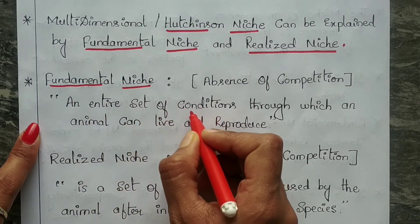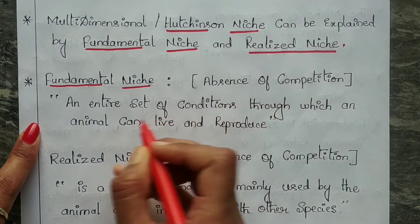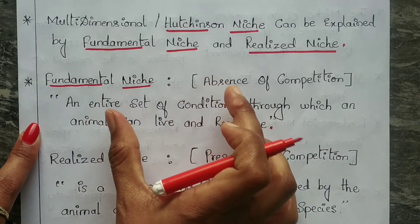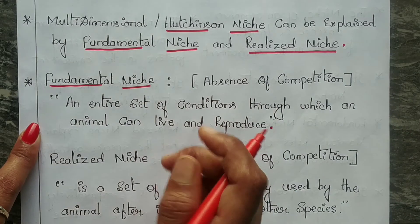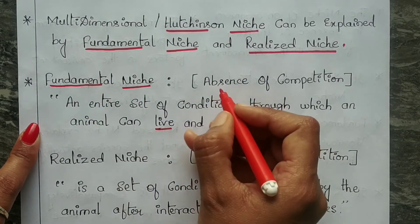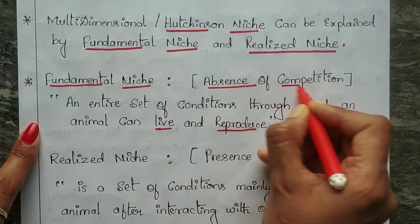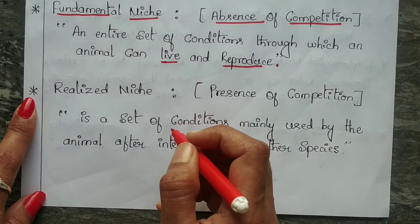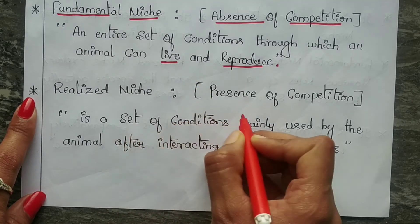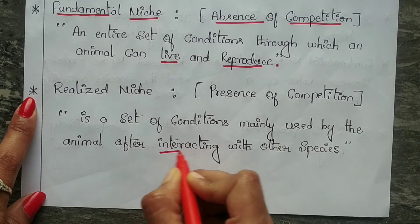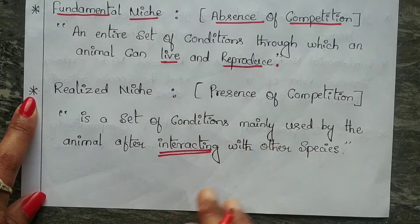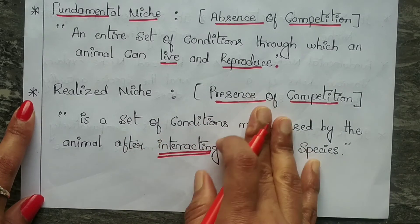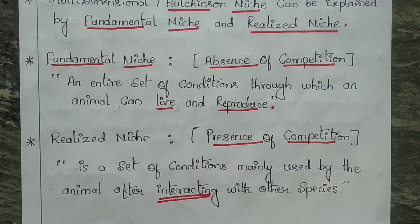The fundamental niche is the entire set of conditions under which an animal can live and reproduce — in the absence of competition. The realized niche is the set of conditions actually used by the animal after interacting with other species — that is, in the presence of competition.